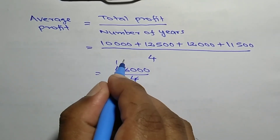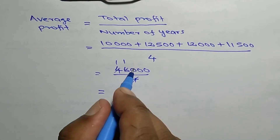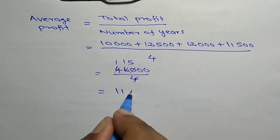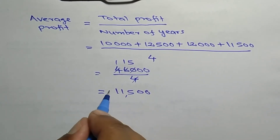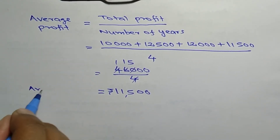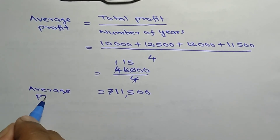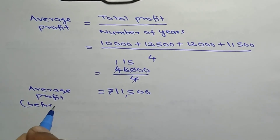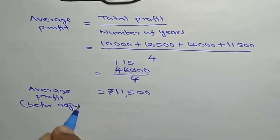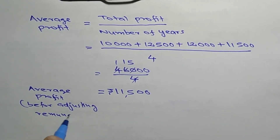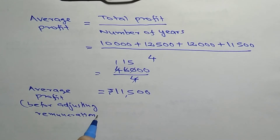Total profit is 46,000 divided by 4, which equals 11,500. This is the average profit — but this is before adjusting remuneration, as stated in the question.